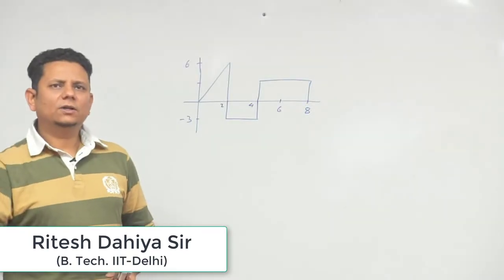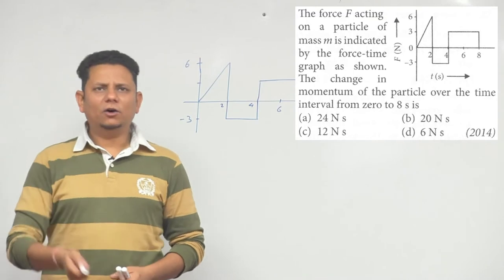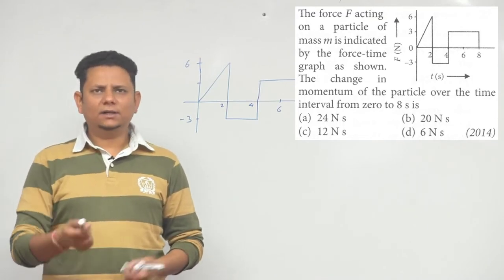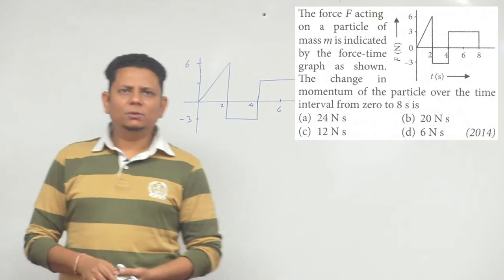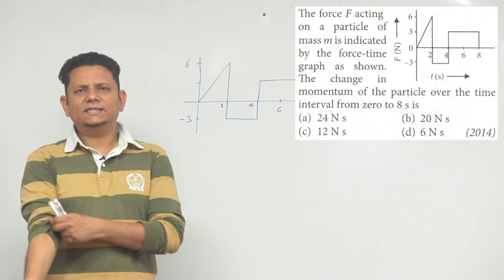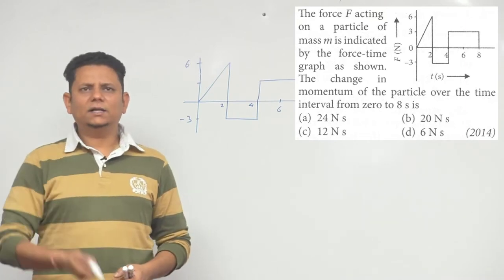Our next question is from the 2014 exam. It says the force F acting on a particle of mass m is indicated by a force-time graph as shown in the diagram. The change in momentum of the particle over the time interval from 0 to 8 seconds will be. Options are 6 newton-second, 12 newton-second, 24 newton-second.